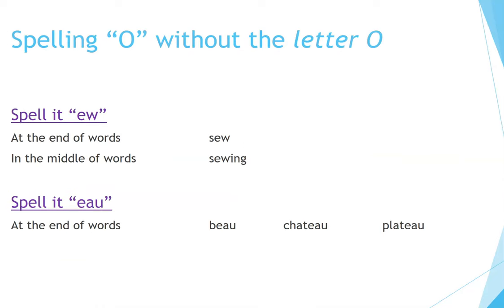Spelling O without the letter O. Spell it EW: at the end of words — Sew; in the middle of words — Sewing. Spell it EAU: at the end of words — Beau, Chateau, Plateau.